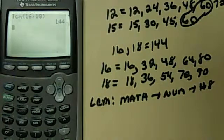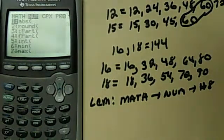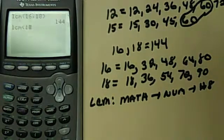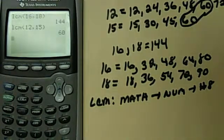So if I do 12 and 15, you can go and do 12 and 15. Math, Num, and then number 8. And then you put in 12 comma 15. And then you get 60, which is much faster than us listing all those factors.